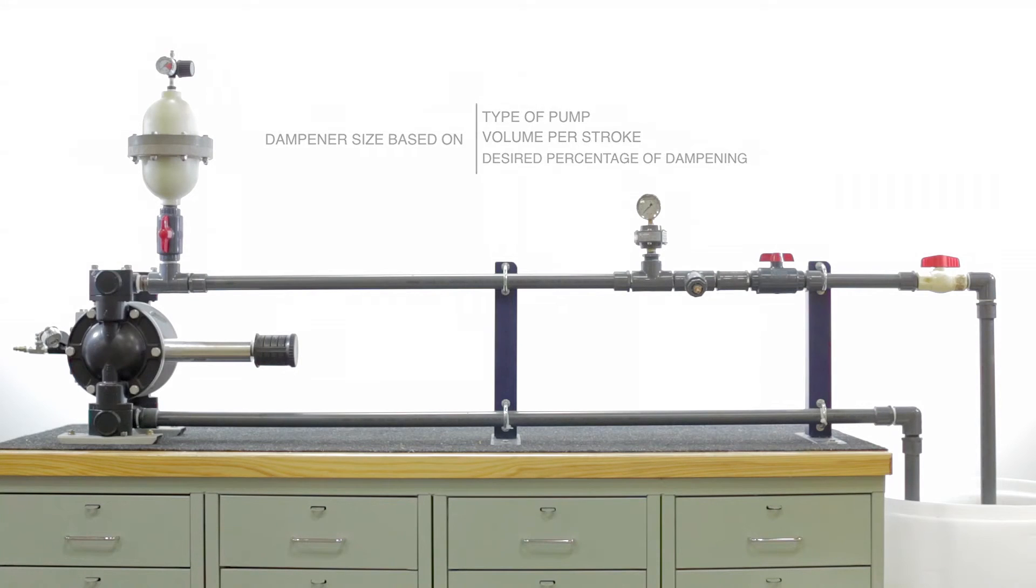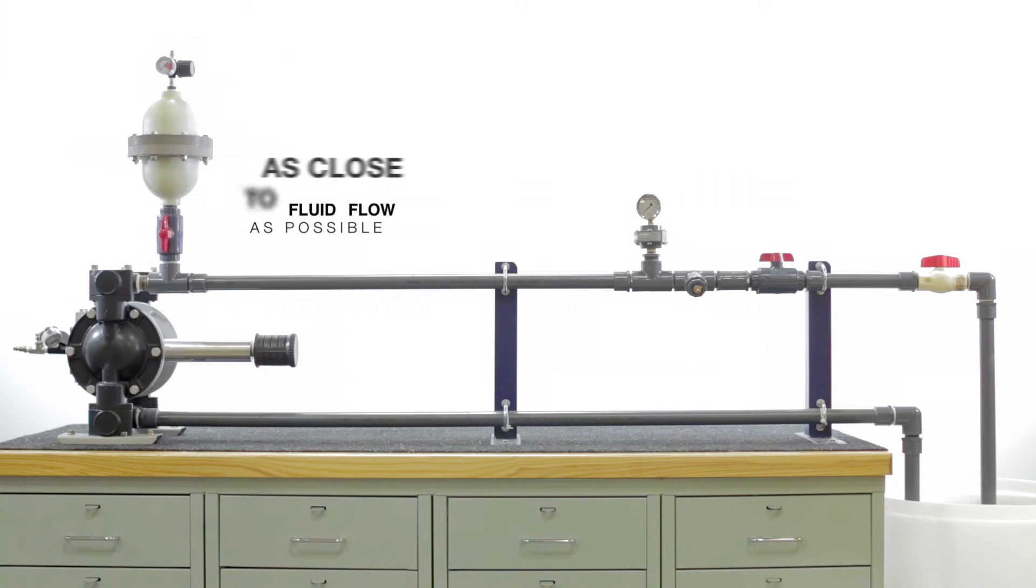Location should be as close to the pump discharge as possible within 10 pipe diameters. The dampener should not be mounted on any branches or any type of risers. You want it as close to the fluid flow as possible.